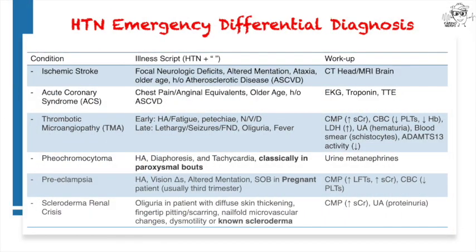In addition to end organ damage as a sequela of hypertension itself, you also want to be cognizant of other conditions that manifest with markedly elevated blood pressures, all of which require urgent management. The first two items, ischemic stroke and acute coronary syndrome, are by far the most prevalent. The illness script for ischemic stroke — focal neurologic deficits — is very similar to that of hemorrhagic strokes and requires head imaging to fully differentiate.